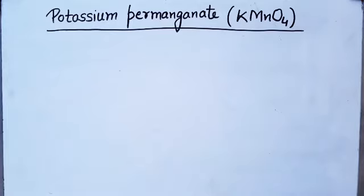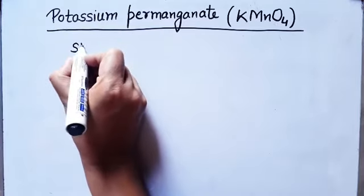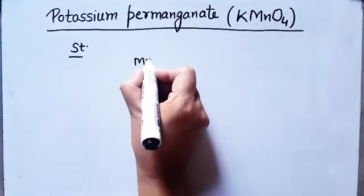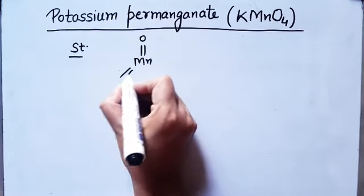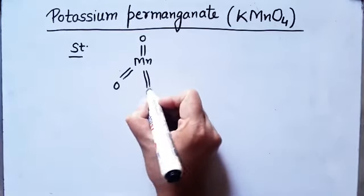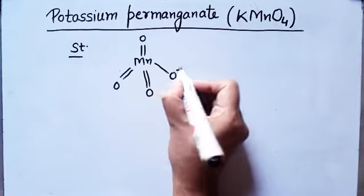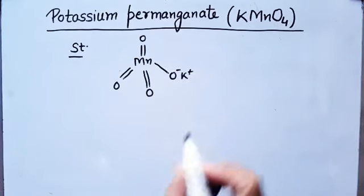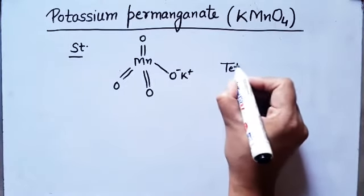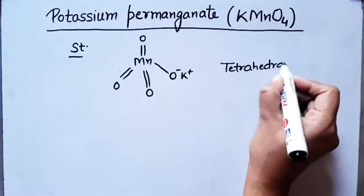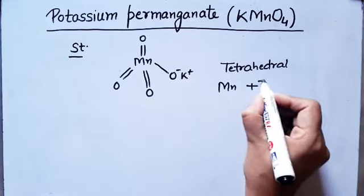Good morning everybody, students. Today I will discuss a very important and very strong oxidizing agent used in organic chemistry. I will talk about potassium permanganate. Potassium permanganate is KMnO₄, and the structure of KMnO₄ is: Mn forms 3 double bonds with oxygen, and one oxygen is O⁻ forming a single bond with K⁺. Overall, it has a tetrahedral structure in which manganese is in +7 oxidation state.